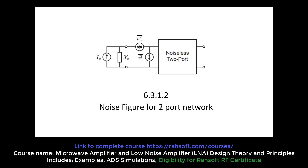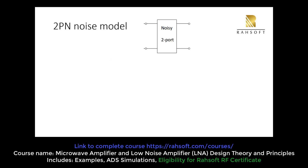We are going to find the noise figure formula for a two-port noisy network and we will see how we can use this formula to optimize our circuit to have a low noise — or the minimum noise. We are going to start with a noisy two-port.